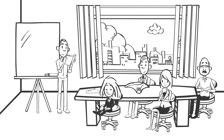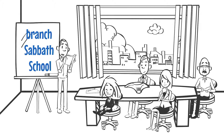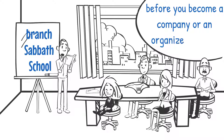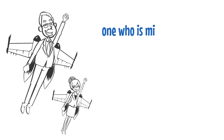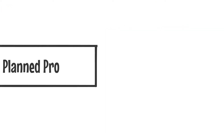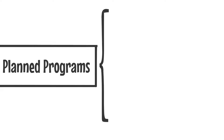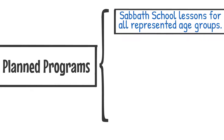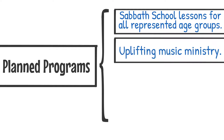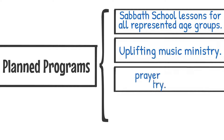Start off as a branch Sabbath school before you become a company or an organized church. Have a dedicated leader — one who is mission-driven. Have well-planned programs like Sabbath school lessons for all represented age groups, uplifting music ministry, and intercessory prayer ministry.